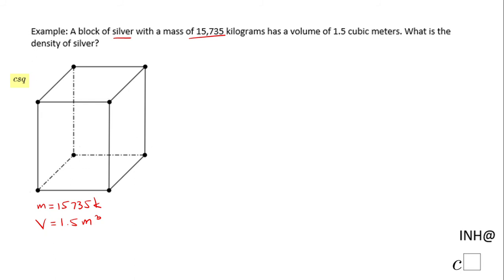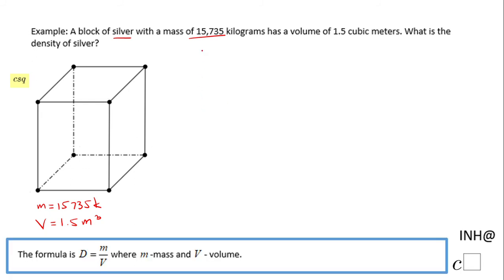How do we find the density? We have a formula which says the density, which I call the letter D, equals the mass over the volume. Just be careful, sometimes in other classes instead of D for density, you're going to use the letter rho, which is a Greek letter.